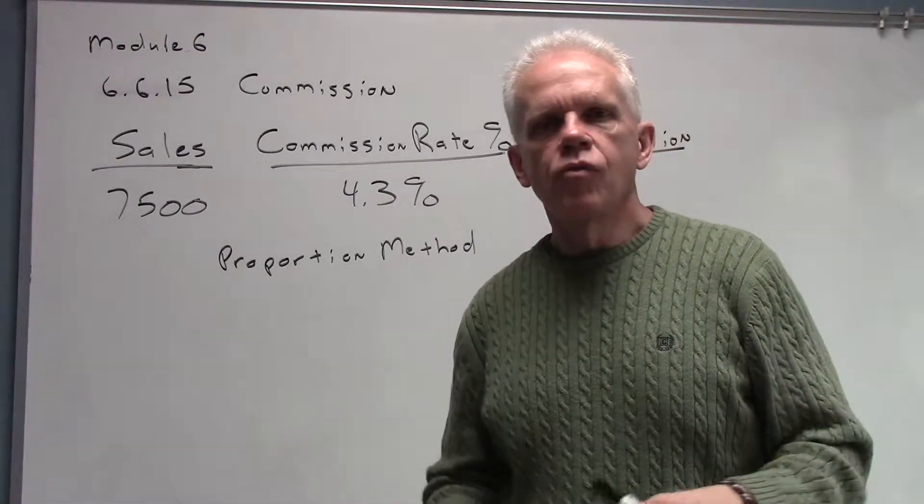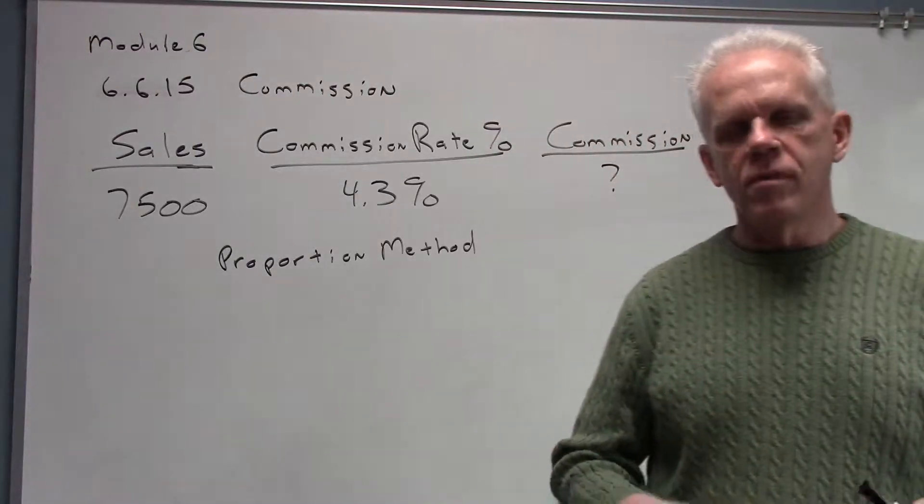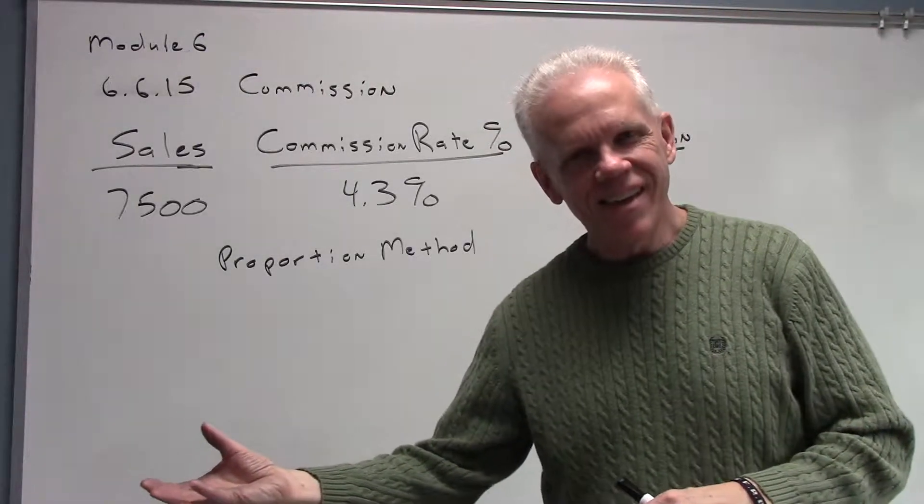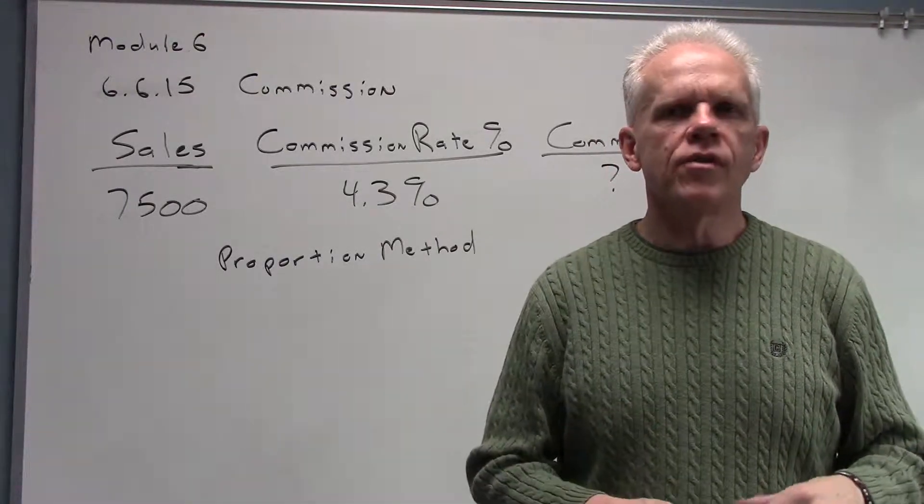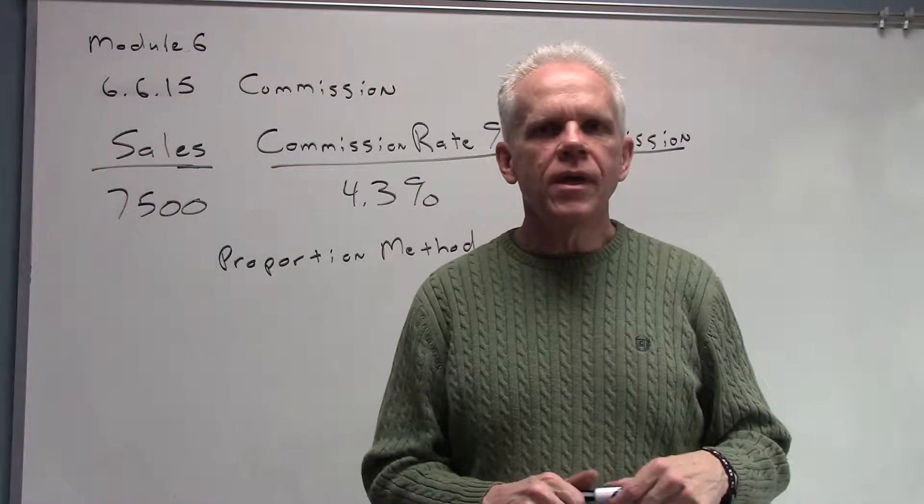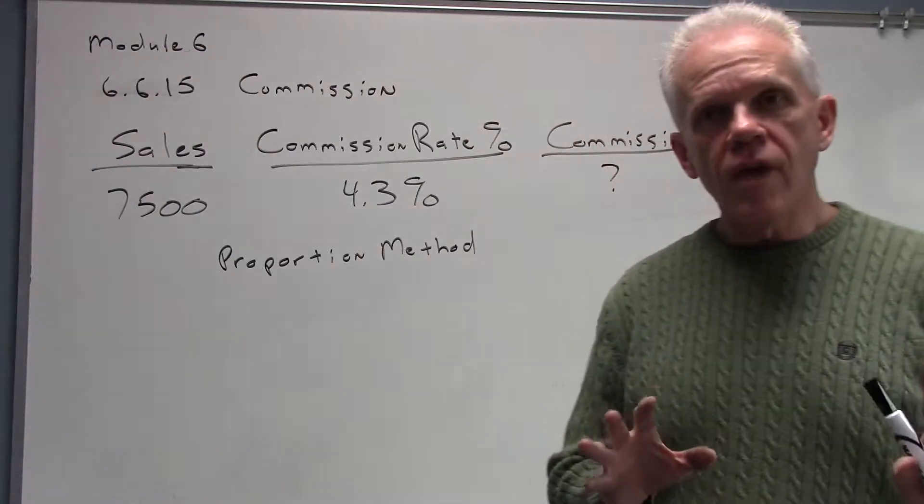If you were a car salesman and you sold a $10,000 car and you got to keep 20% of the $10,000 car, your commission would be $2,000. You'd get to keep a piece or a part of your sales.